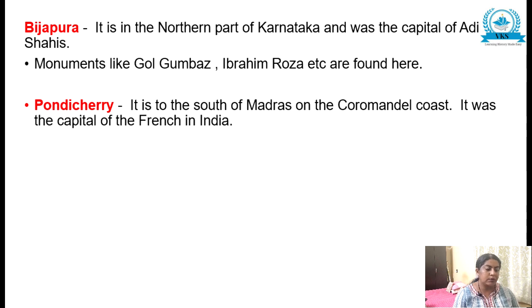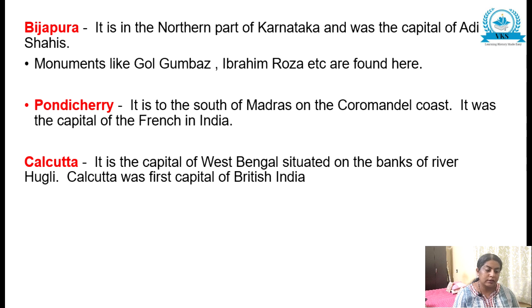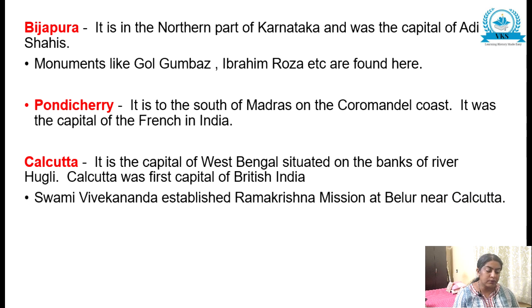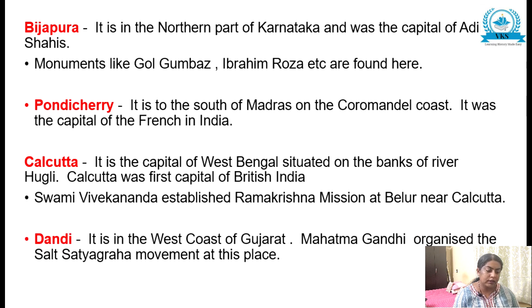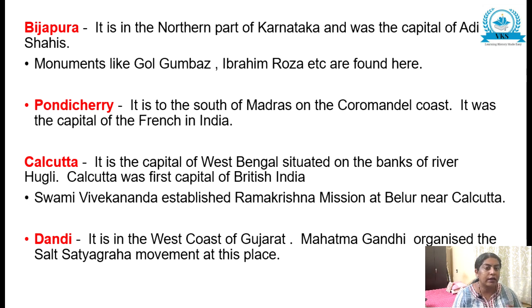For Pondicherry: it is to the south of Madras on the Coromandel Coast and was the capital of the French in India. For Calcutta: it is the capital of West Bengal, situated on the banks of the river Hooghly; Calcutta was the first capital of British India and Swami Vivekananda established the Ramakrishna Mission at Belur near Calcutta. For Dandi: it is on the west coast of Gujarat; Mahatma Gandhi organized the Salt Satyagraha movement at this place. This is how you write the explanation about each marked place.